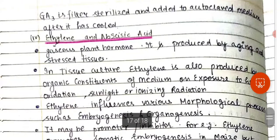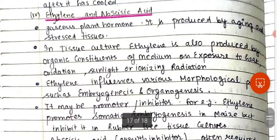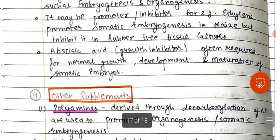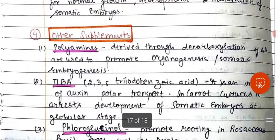Ethylene and abscisic acid are gaseous plant hormones produced by aging and stressed tissues. Ethylene promotes somatic embryogenesis in maize but inhibits it in rubber. Abscisic acid is a growth inhibitor that is often required for the normal growth, development, and maturation of somatic embryos.